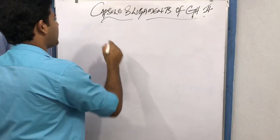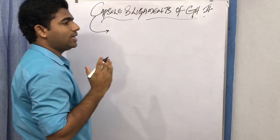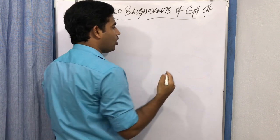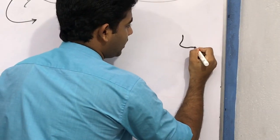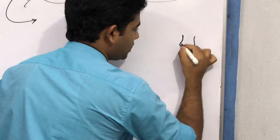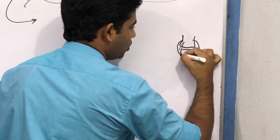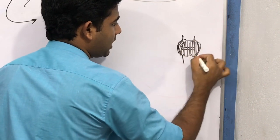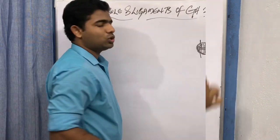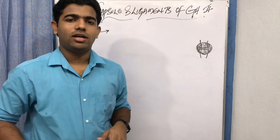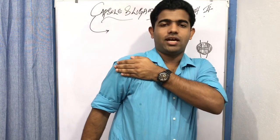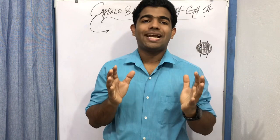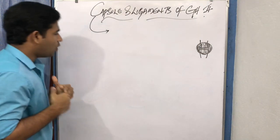Let's start with the capsule of the glenohumeral joint. A capsule is a structure that covers the joint in all directions — anteriorly, laterally, posteriorly — forming a complete covering. The glenohumeral joint has a complete capsule covering it in all directions.